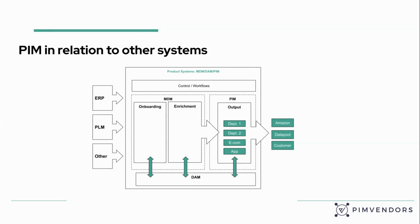How does PIM fit into your IT architecture, your IT landscape? We have different input sources — those could be your ERP, your enterprise resource planning tooling, your product lifecycle management tooling, or other sources. You take those into your product systems — your master data management tool, your MDM tool, your digital asset management tool, DAM, or your product information management tool. Then you publish those to your internal and external channels. The onboarding and enrichment can be managed in the MDM section or in your PIM. And everywhere there's an interaction with your DAM to get and store the correct images. On top of that sit the controls or workflows.